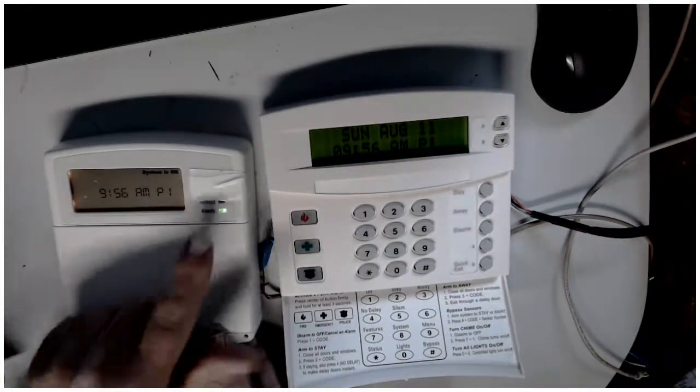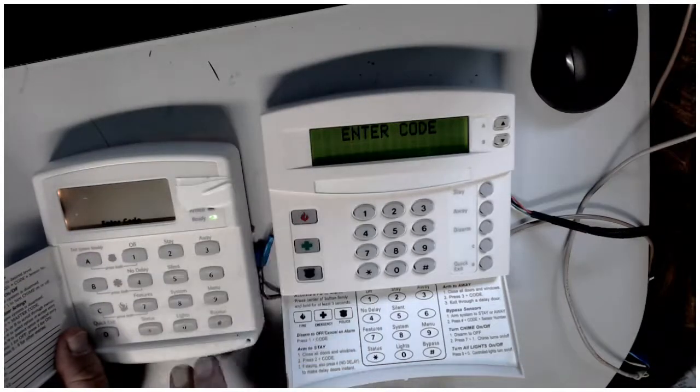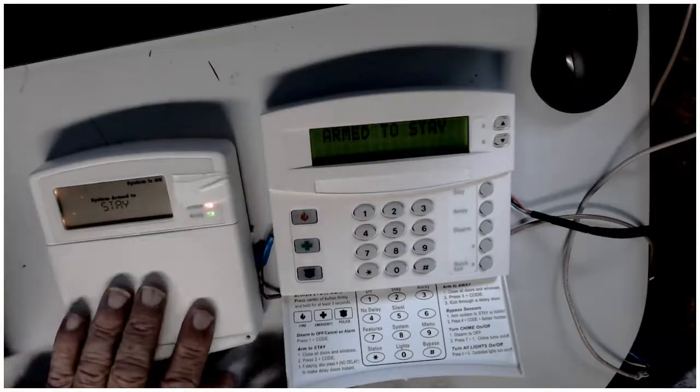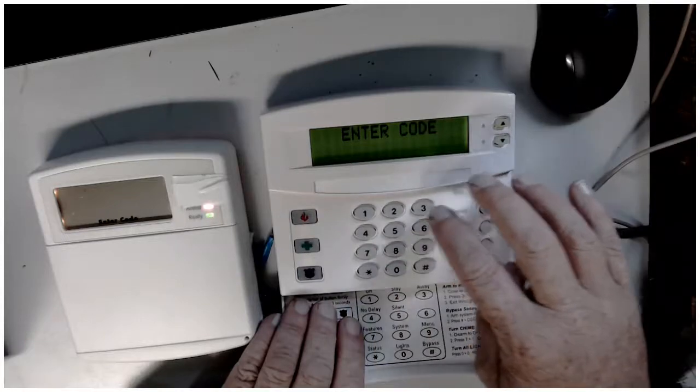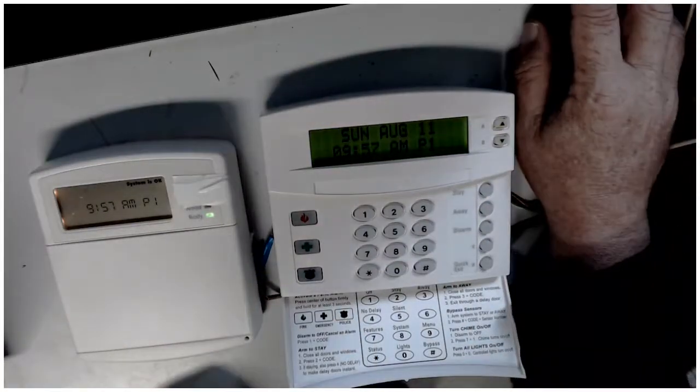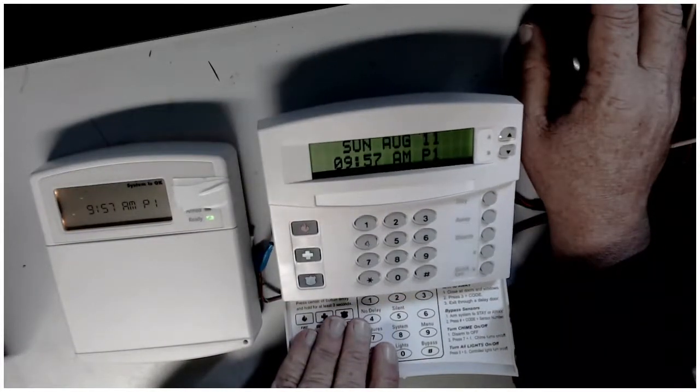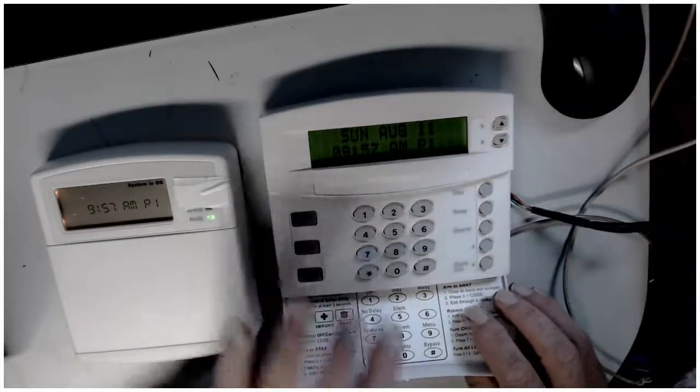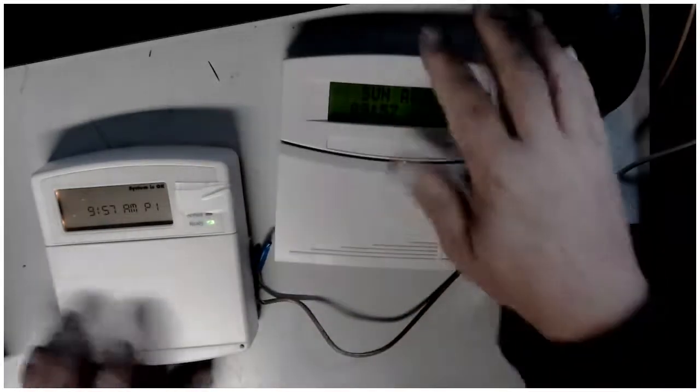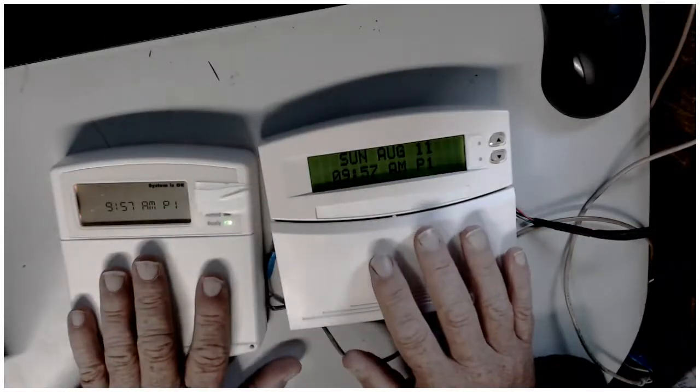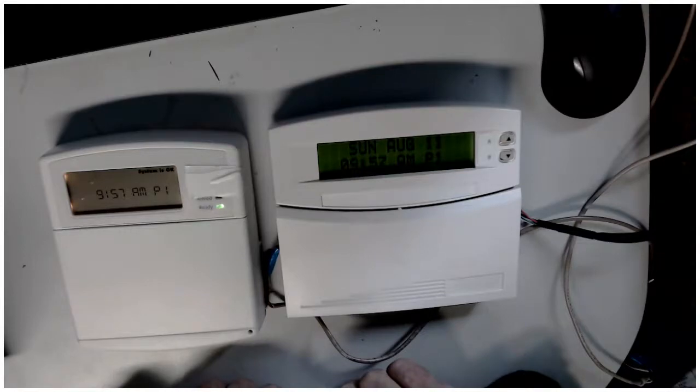And there you go. Now see the green light came on. So now I can just arm it. Armed it. And this one over here, I'll disarm it. And if you notice, right here next to the Sunday, there is no more little star telling you that it's in trouble. You just hit the star and it says system's okay. So there you go, folks. That's how you unenroll a keypad and enroll a keypad. Can't be simpler than that. Thanks for watching.